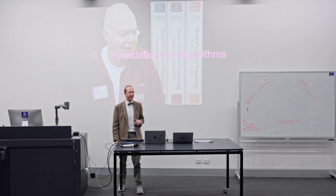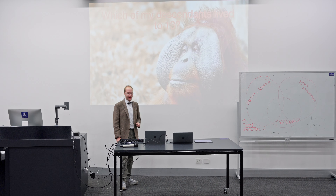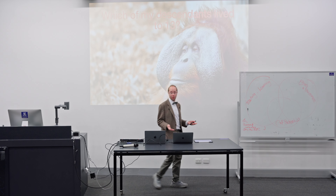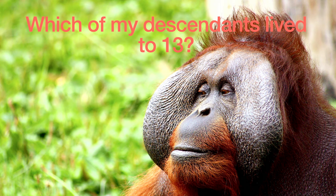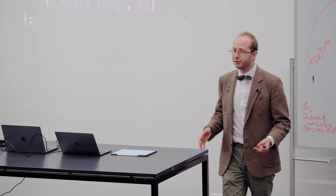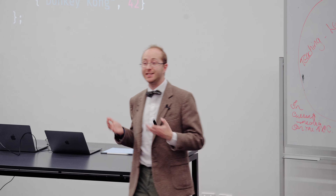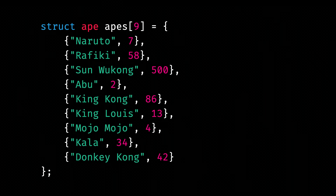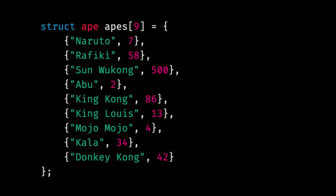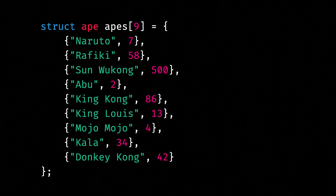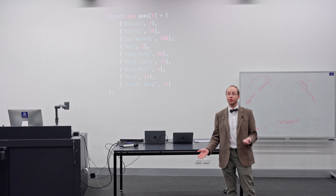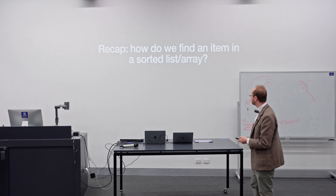Going back off yesterday, we had our friend the ape who wanted to know which of his descendants lived to a given age. We had a few different techniques and data structures. We started with a normal array, both sorted and unsorted. In the case of an unsorted array, we had to look through every element. If we had a sorted array, we could do it in O(log n) time using binary search.